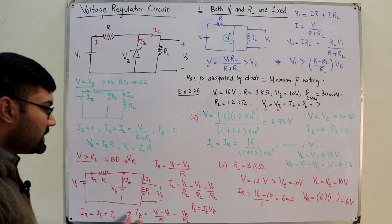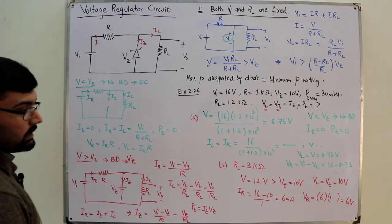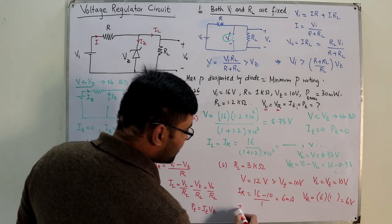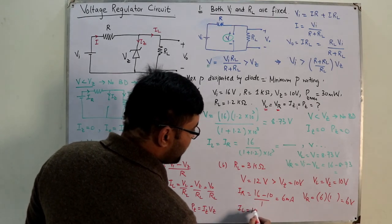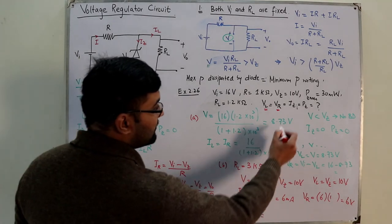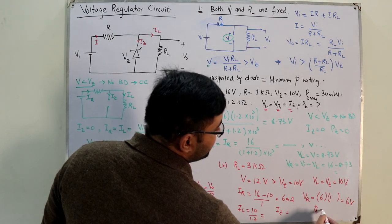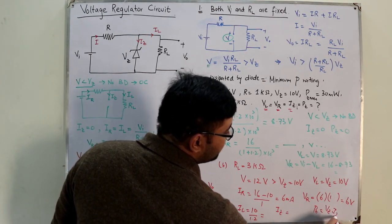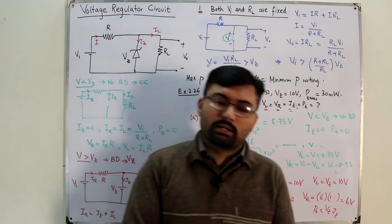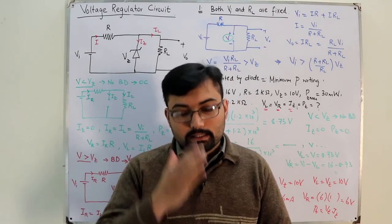IZ equals IR minus IL. IL equals VL divided by RL equals 10 divided by 1.2k. You can find IZ from those values, then PZ equals IZ times VZ, with VZ known from the start. That finishes this video. See you in the next lecture very soon, inshallah. Till then, take care of yourselves and everyone around you. Do remember me in your prayers. Goodbye.